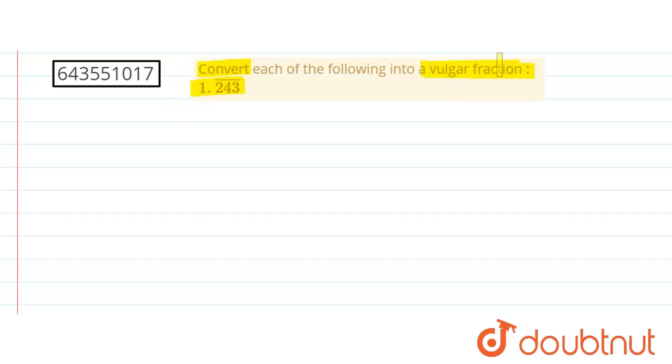Let us consider this fraction as x. So x is equal to 1.243 bar. Now 243 is repeating, so this can be written as x is equal to 1.243243 and so on.